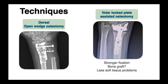There are different techniques to perform osteotomy corrections in distal radius malunions. Conventionally, a dorsal open wedge osteotomy is done using a dorsal approach and filling the gap with shaped corticocancellous grafts. This approach provides good results, but the fixation is less robust and you can also face more soft tissue problems because of the dorsal tendons.